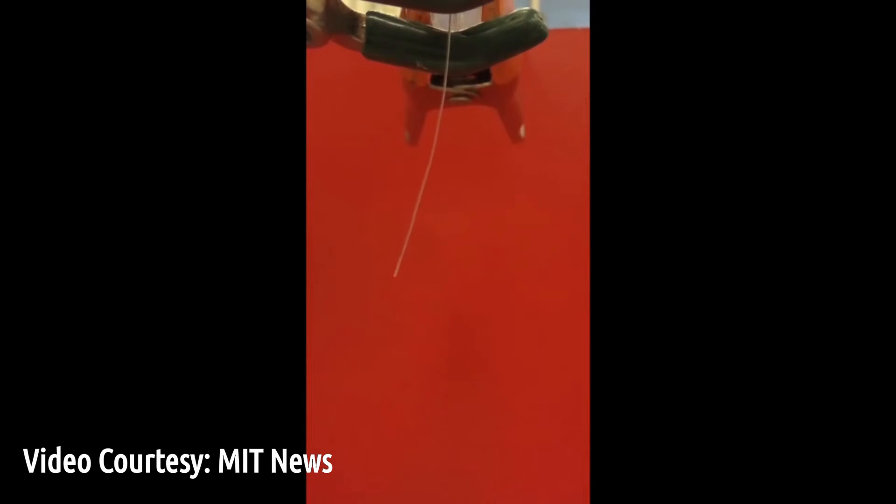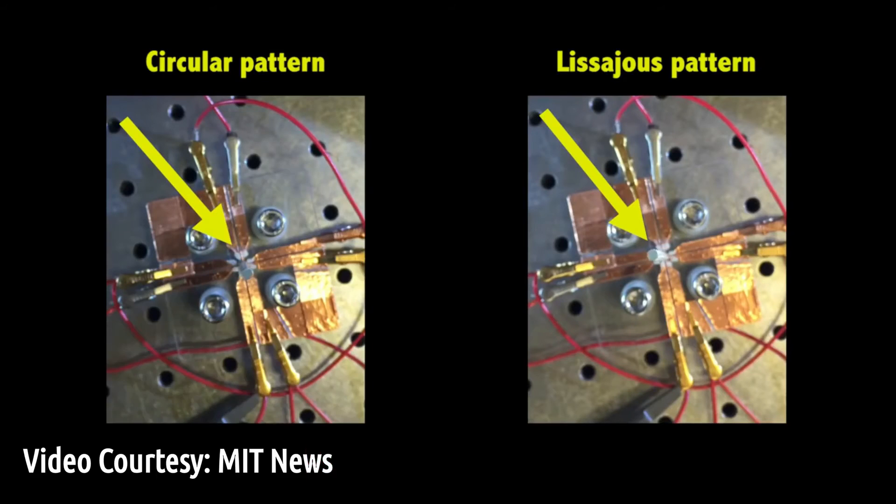By heating specific areas of the fiber in sequence, they found they can produce more complex movements. For example, in their lab tests, the team used this technique to get the fibers to move in circles and then in figure eights.